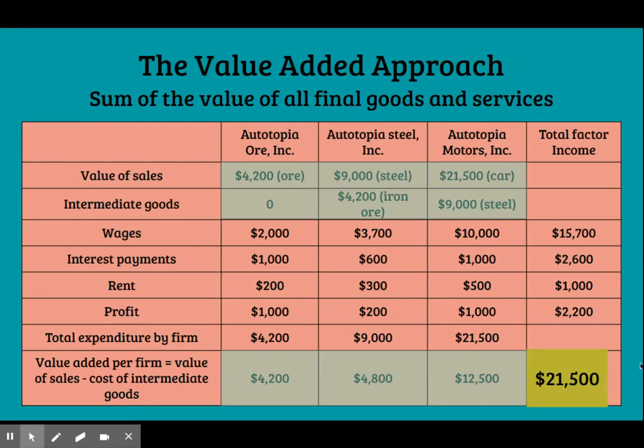You might notice that this is the same as the car producer's value of sales — the value of the car itself. Indeed it is. The car is the only final good produced in this economy, and the cost of the car therefore includes the value of all the resources used to produce it. We'll discuss that more in a moment.